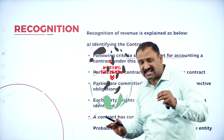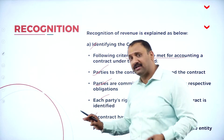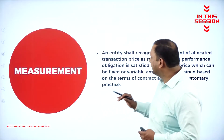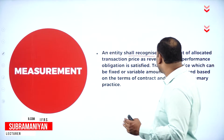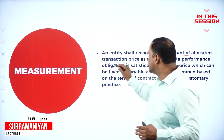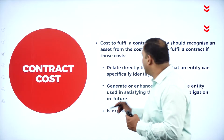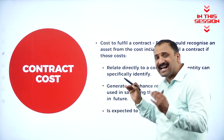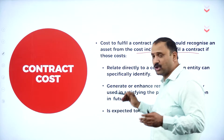Each party's rights and payments, whatever are the rights and payment of the contract, is identifiable. The measurement is going to be an entity recognized by the amount allocated transaction price as revenue. The cost to fulfill a contract - an entity should recognize an asset from the cost incurred if the contract cost.